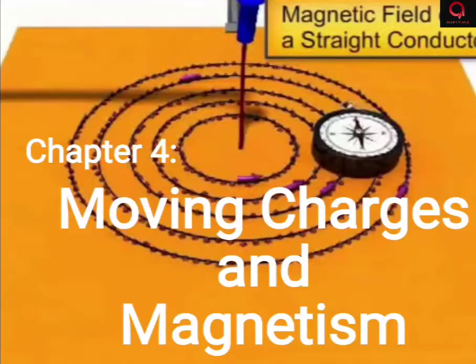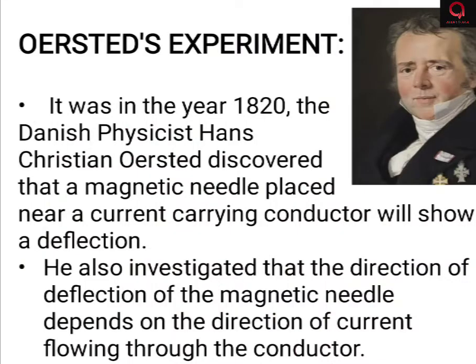This discovery happened in the year 1820, when Danish physicist Hans Christian Oersted discovered that a magnetic needle placed near a current-carrying conductor shows a deflection. The scientist was engaged in some other experiment but accidentally came to discover this phenomenon.